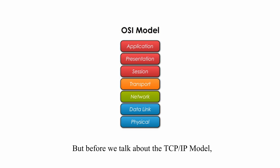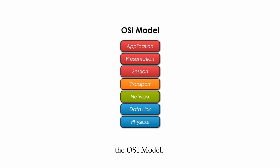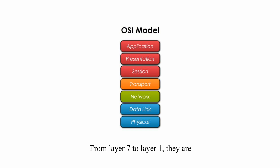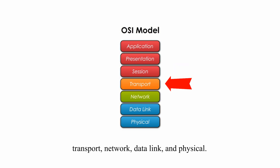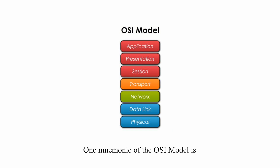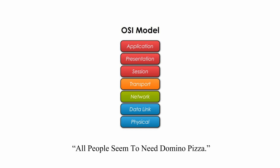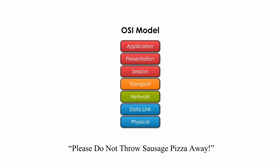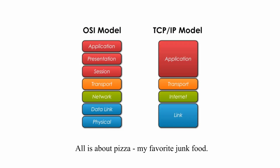But before we talk about the TCP/IP model, let's review the other famous networking model, the OSI model. The OSI model has seven layers, from layer 7 to layer 1. They are: application, presentation, session, transport, network, data link, and physical. One mnemonic of the OSI model is 'All People Seem To Need Domino Pizza' if we view the model from top to bottom, or 'Please Do Not Throw Sausage Pizza Away' if we look at the model from bottom to top — all about pizza, my favorite junk food.